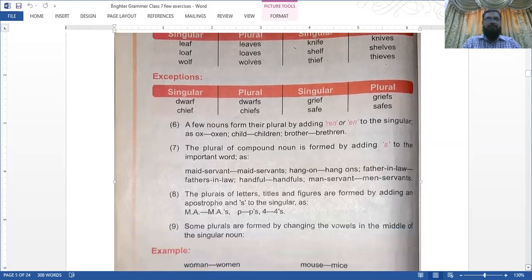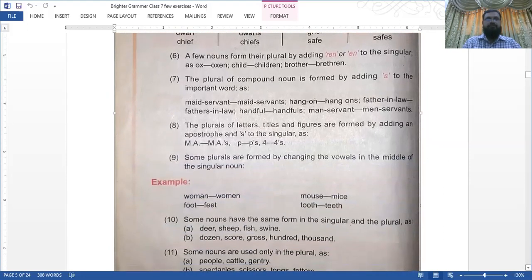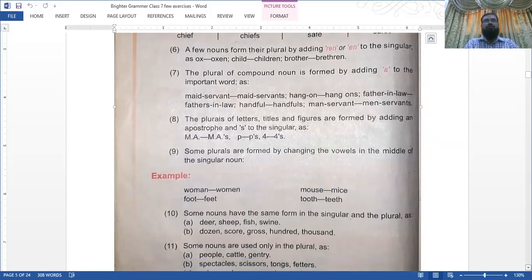Number six: a few nouns form their plural by adding -ren or -en to the singular, as ox/oxen, child/children, brother/brethren. The plural of compound nouns is formed by adding S to the important word, as maidservant/maidservants, hangeron/hangerson, father-in-law/fathers-in-law, handful/handfuls, manservant/menservants.